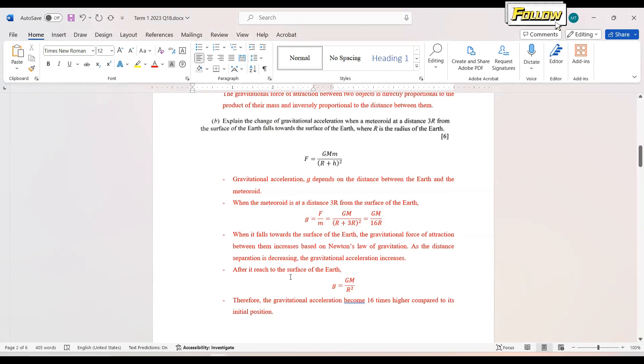And then when it reaches the surface of the Earth, we can calculate that g is equal to GM over R squared. So from here, we can conclude that the gravitational acceleration becomes 16 times higher compared to its initial position. So if we have other versions of answer as well, we can leave it in the comment section below for this question.